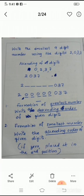Then formation of smallest number. How to form a smallest number from given digits? For that we should write the ascending order of the given digits. If 0 is present when finding the smallest number, place 0 in the second position.